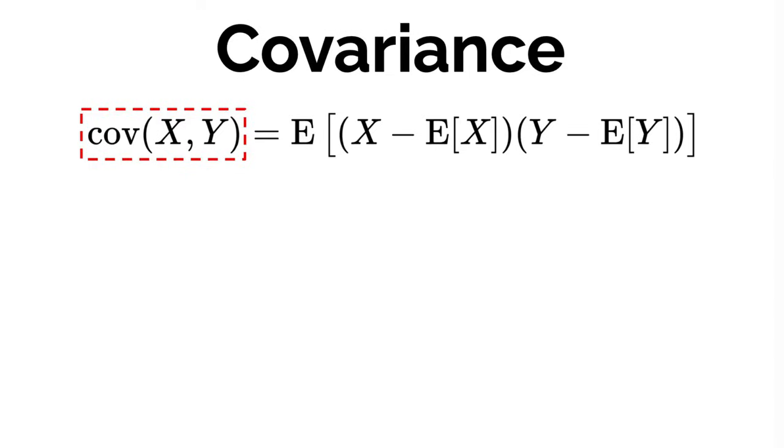The way we measure this in mathematical terms is through something called the covariance between random variable x and random variable y, and that's defined as being equal to the expected value of x minus the expected value of x multiplied by y minus the expected value of y.